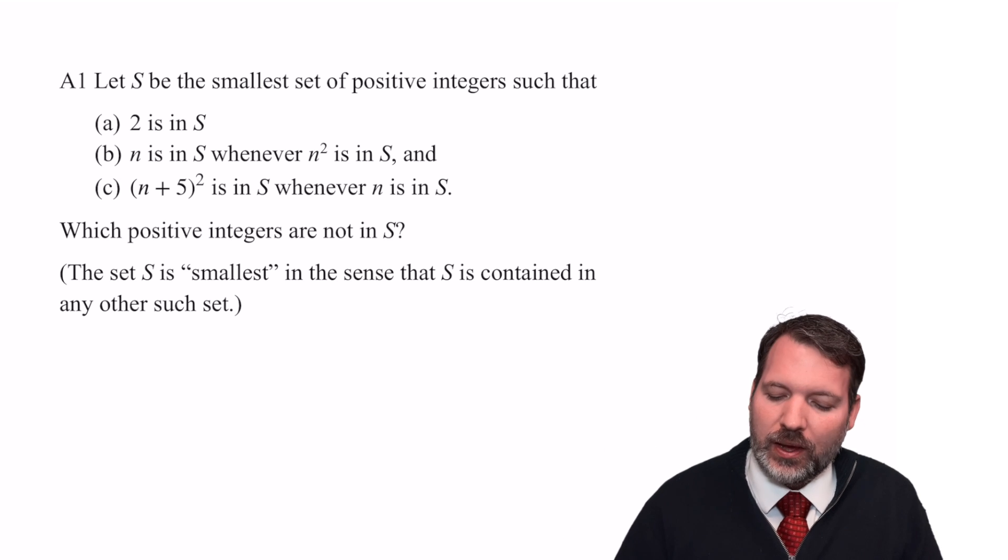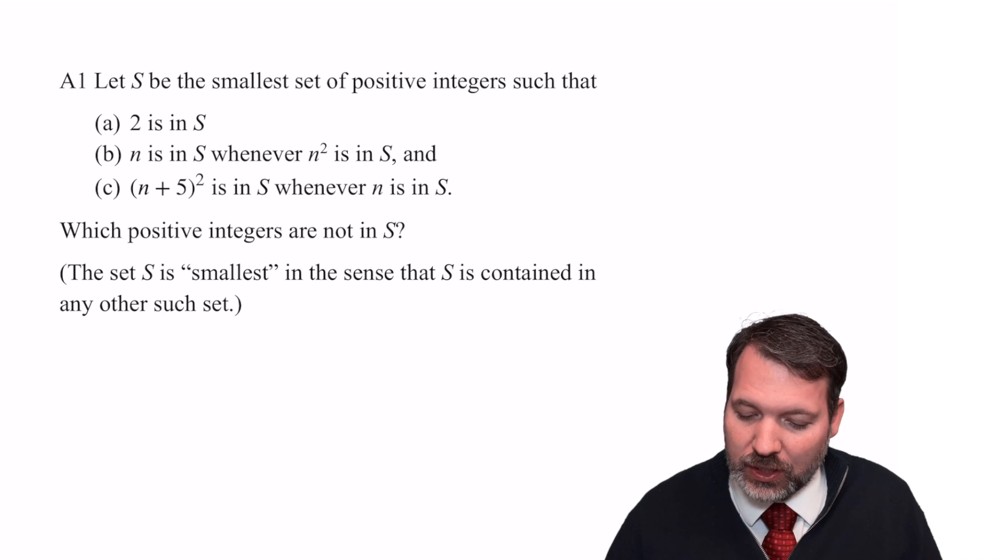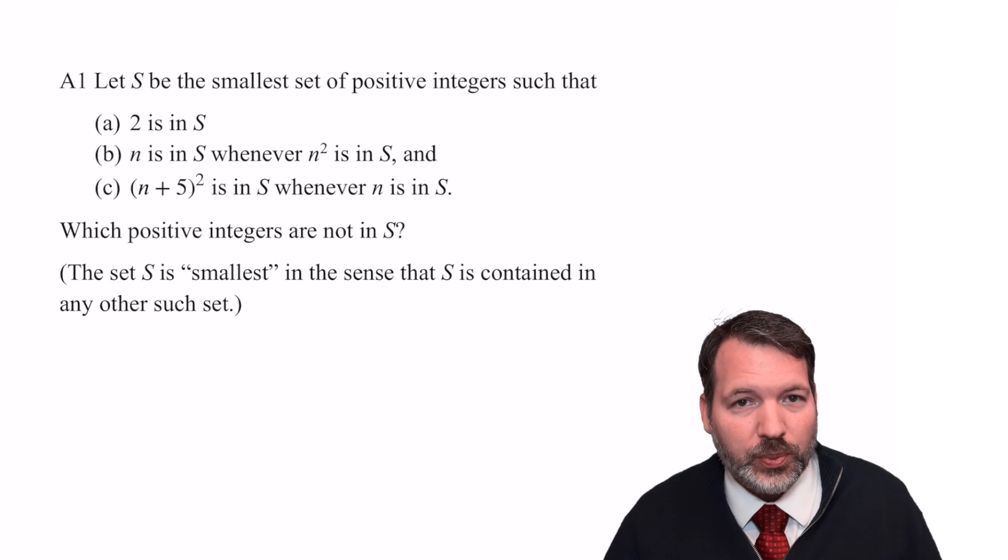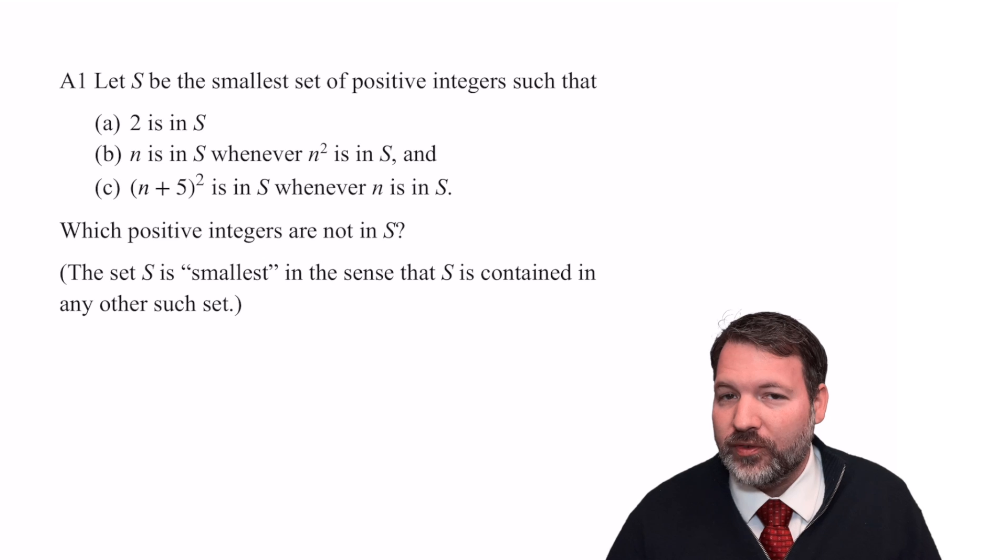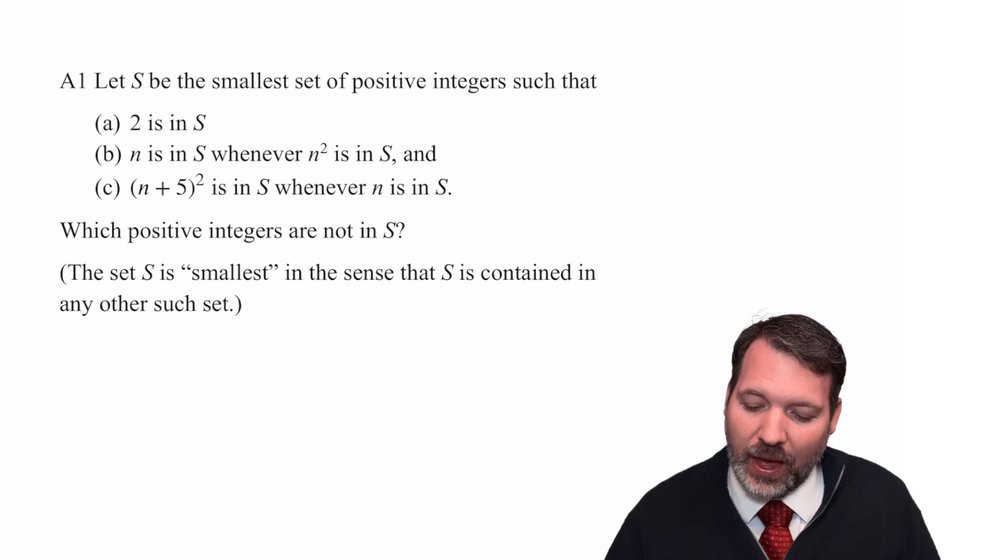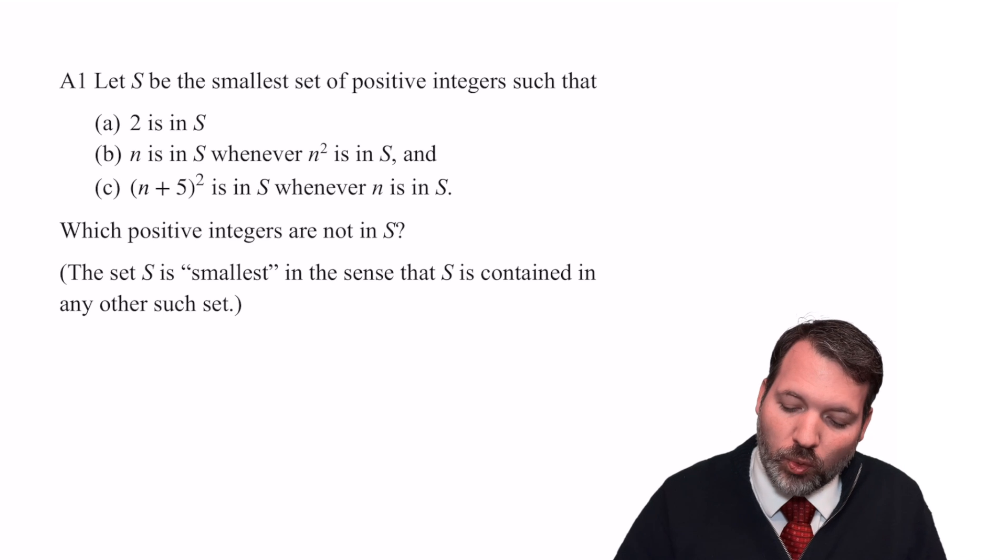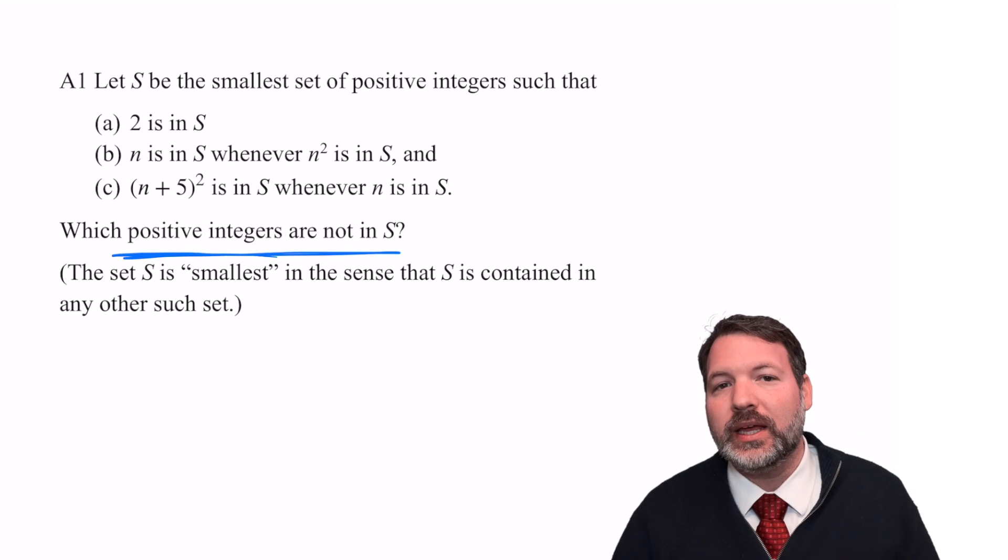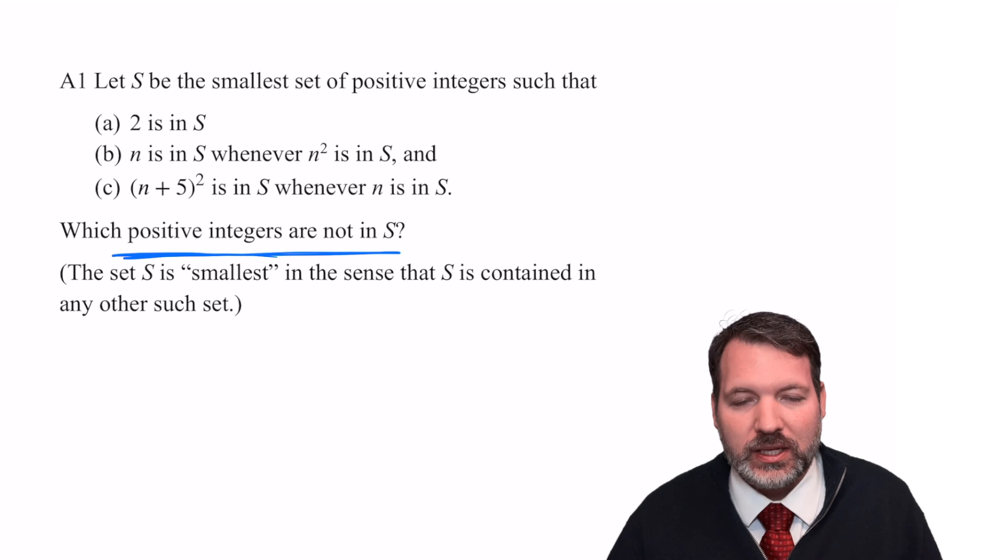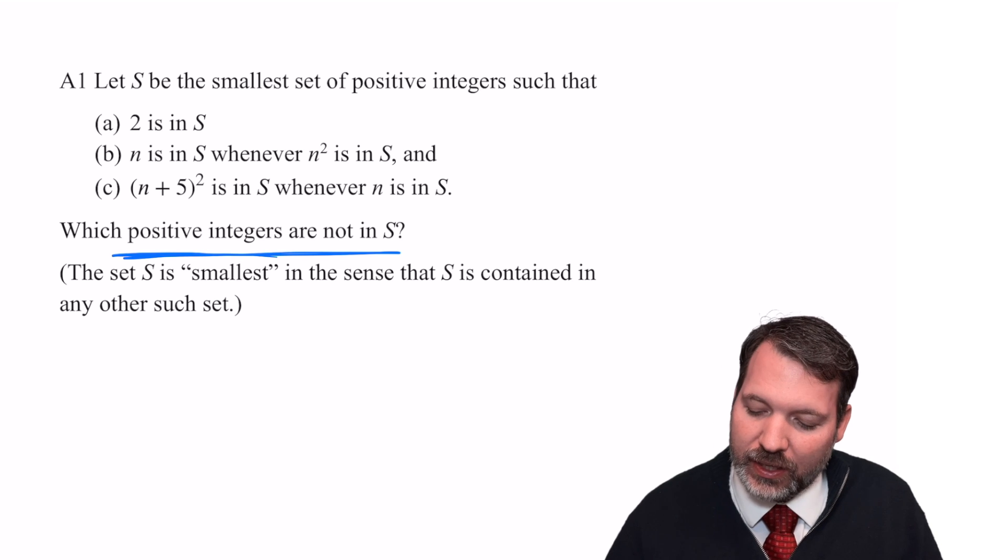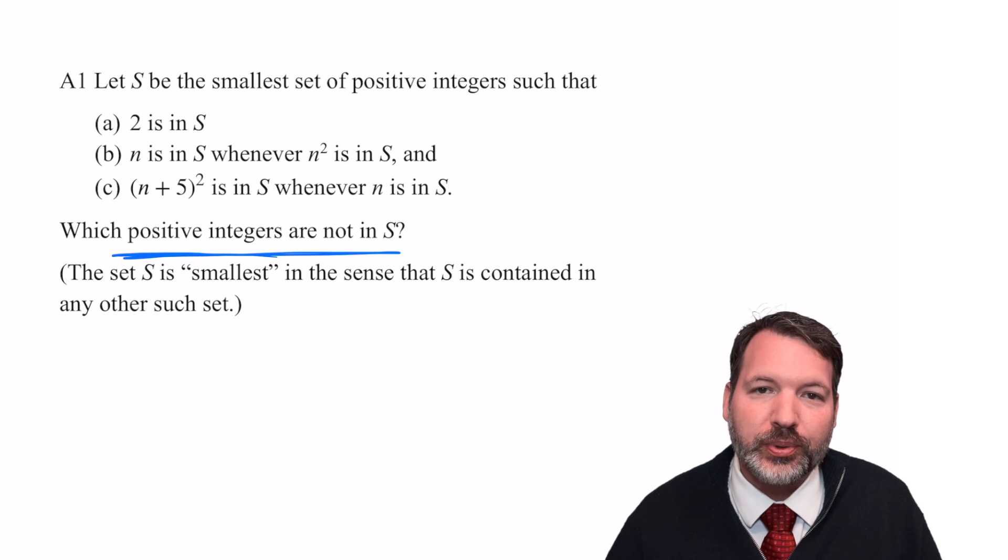But that's enough prologue. Let's get into it. A1, let S be the smallest set of positive integers such that, and we have these three qualities that we're supposed to obey, 2 is in set S, N is in S whenever N squared is in S, and N plus 5 squared is in S whenever N is in S. The question asks us, which positive integers are not in S? And then it clarifies one thing, what it means when it says set S is the smallest possible set is that S is contained in any other set that would obey these particular rules.